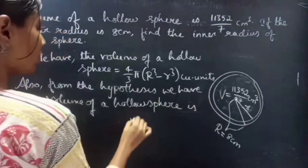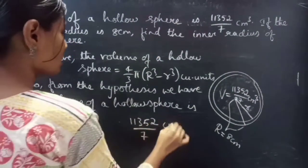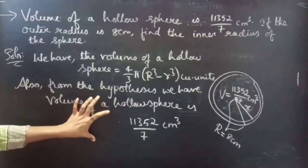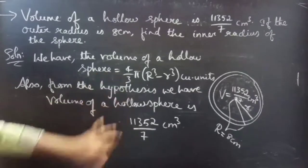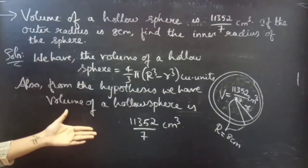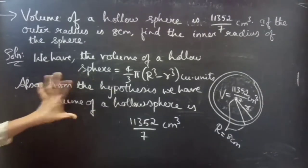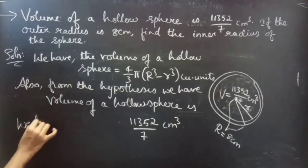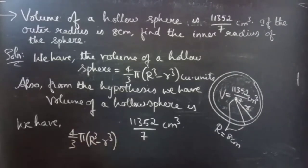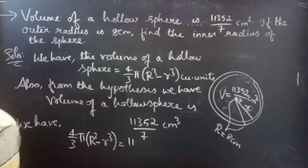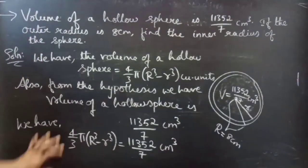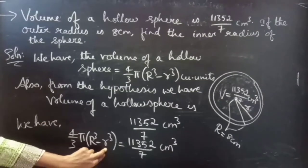The given volume of the hollow sphere is 11352/7 centimeter cube. Both expressions represent the volume of a hollow sphere, so we can equate them. We have 4/3 π into (R³ minus r³) equals 11352/7 centimeter cube. We will use this condition to find the inner radius small r.